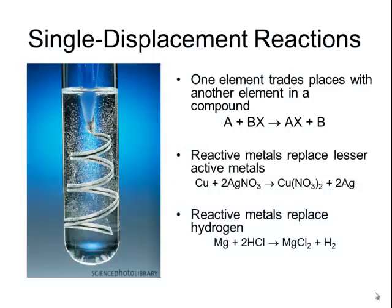Reactive metals will also replace hydrogen, especially hydrogen that's in water or in an acid. Magnesium is an example of a reactive metal that when placed into hydrochloric acid will cause the hydrogen to be displaced. In this picture, I have a curly piece of magnesium ribbon dropped into a test tube containing hydrochloric acid. Since the magnesium is more reactive than the hydrogen, the hydrogen is displaced from the compound so that hydrogen bubbles are seen rising to the surface of the test tube.